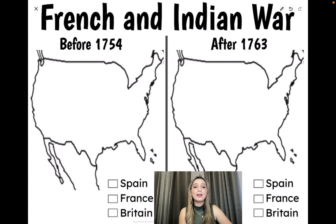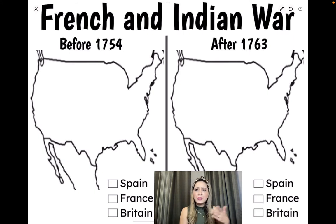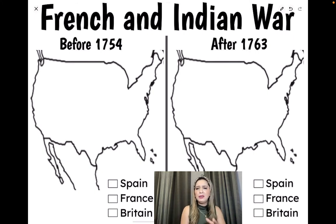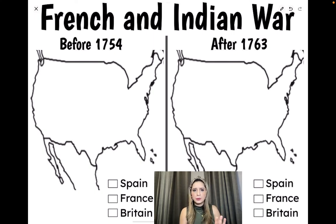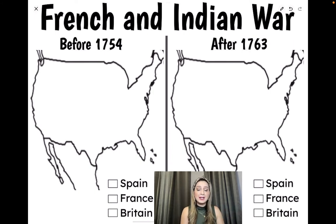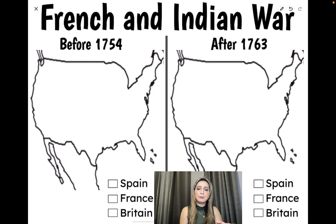Alright boys and girls, let's go ahead and grab our handout, which is the French and Indian War — it looks like this. Let's gather our supplies: we're going to need crayons, colored pencils, or markers — whatever you feel more comfortable using. Make sure you have the colors orange, green, red, blue, and maybe brown when we identify the mountains. Press pause, make sure you have your supplies ready as we continue with our last activity.